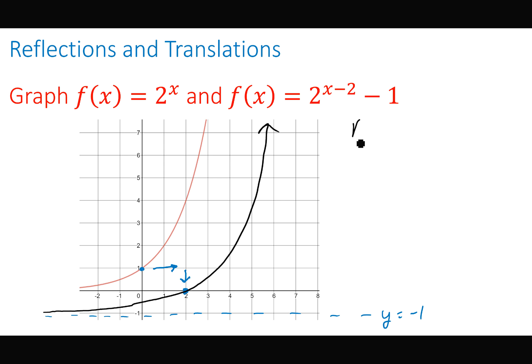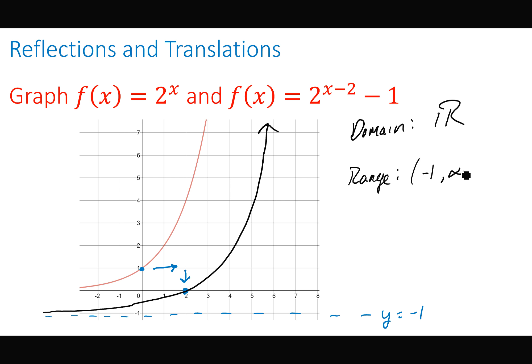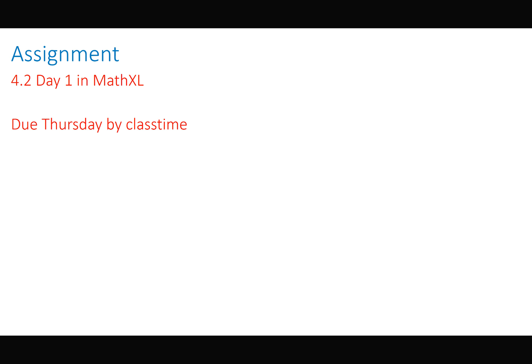For this transformed function, the domain is still all real numbers — negative infinity to positive infinity. The range is now negative one (not inclusive) to positive infinity, since the horizontal asymptote shifted down to y = −1. That wraps up 4.2 day one.